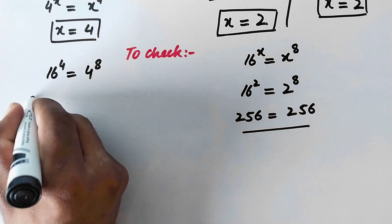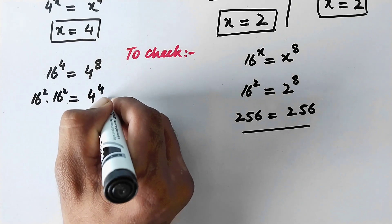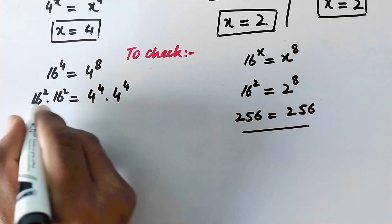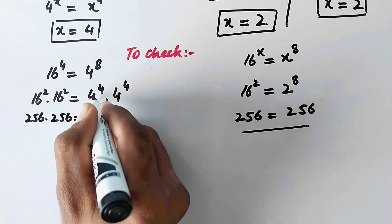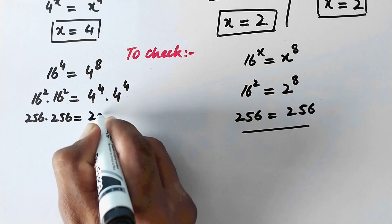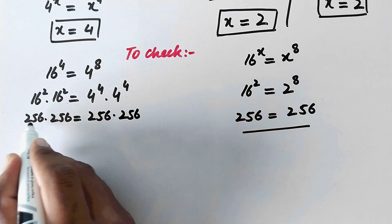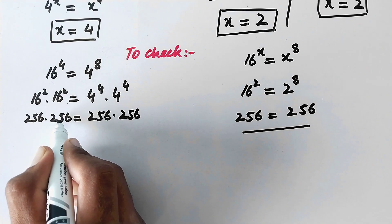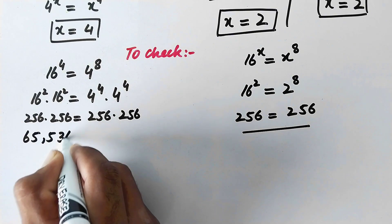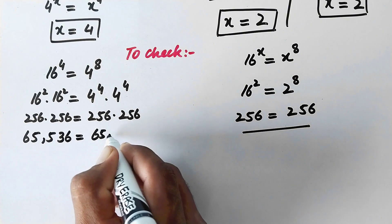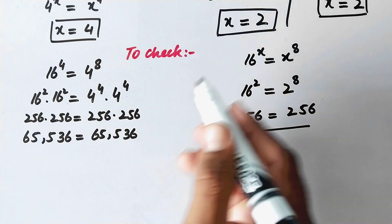When x equals 4, we have 16 to power 4 is equal to 4 to power 4 times 4 to power 4. We can write 16 to power 4 as 16 squared times 16 squared, which equals 256 times 256. Similarly, 4 to power 4 times 4 to power 4 also gives 256 times 256. Multiplying 256 by 256 gives 65536, and the right side also equals 65536. So left hand side equals right hand side, and this solution is also correct.